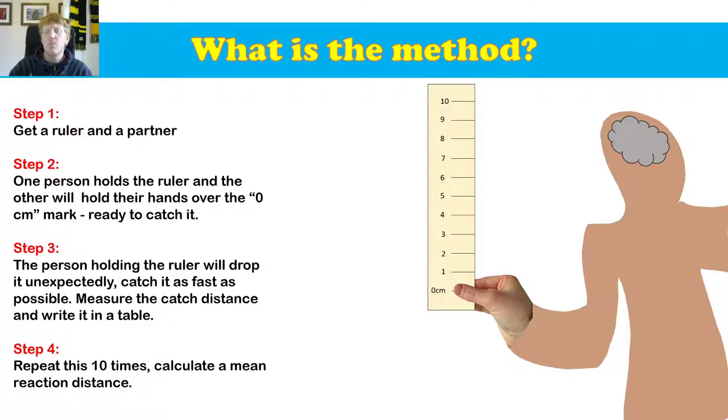Step four, you're going to repeat this drop 10 times. And you're just going to write your distance in the table each time so that we can calculate a mean later on. And so here we go.